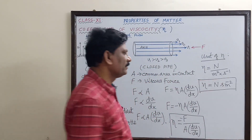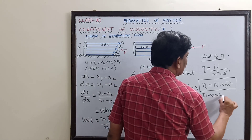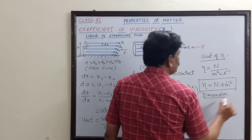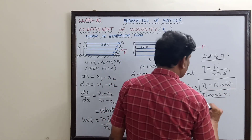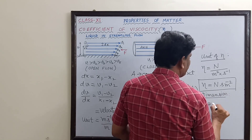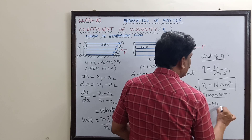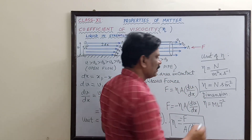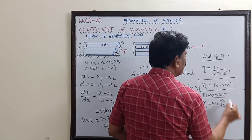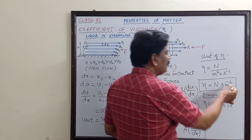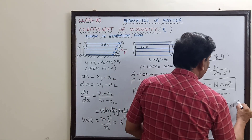We can also derive the dimensions from this. The dimension of force is mass times acceleration = M·L·T⁻². Multiplied by time T, and divided by length squared L², this gives M·L·T⁻²·T·L⁻².